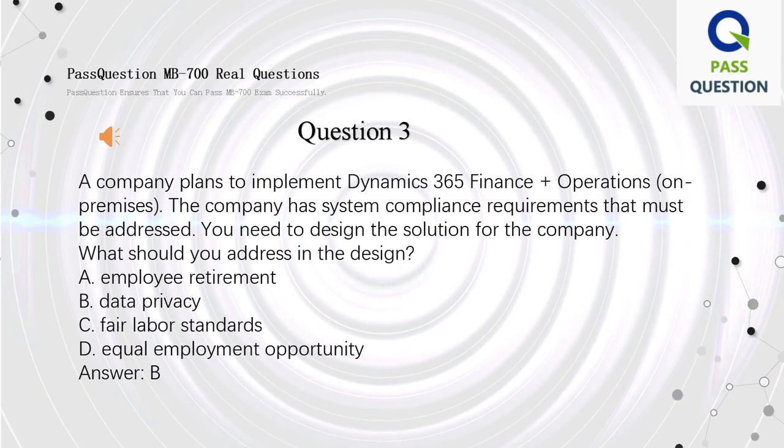Question 3: A company plans to implement Dynamics 365 Finance and Operations on-premises. The company has system compliance requirements that must be addressed. You need to design the solution for the company. What should you address in the design? A: Employee retirement. B: Data privacy. C: Fair labor standards. D: Equal employment opportunity. Answer: B.